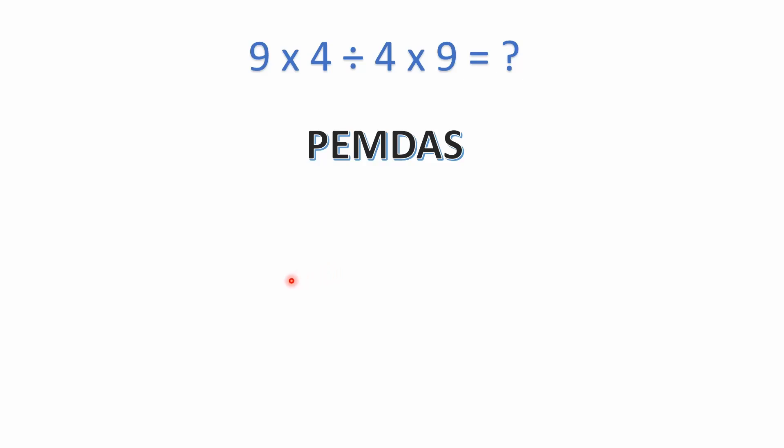Hello everyone and welcome back to the math puzzle crash course. We have a simple order of operations problem with some mixed operations. We have multiplication and division all in the same equation: 9 times 4 divided by 4 times 9 equals what?